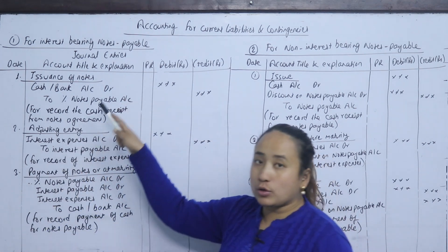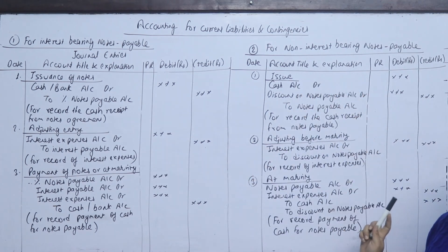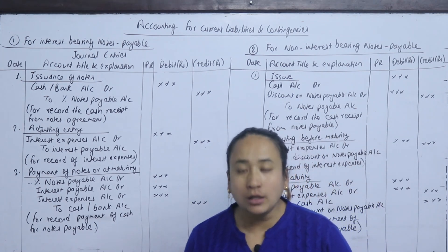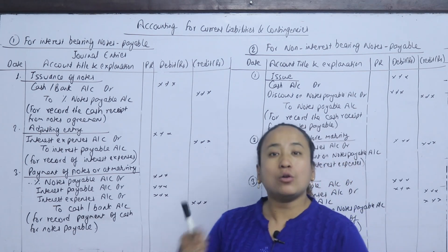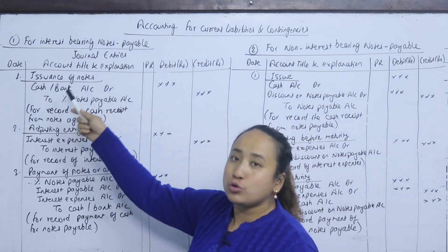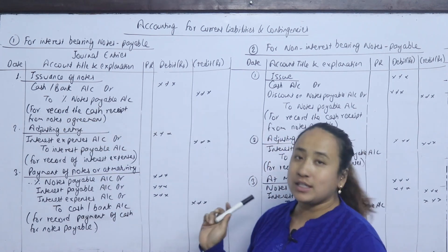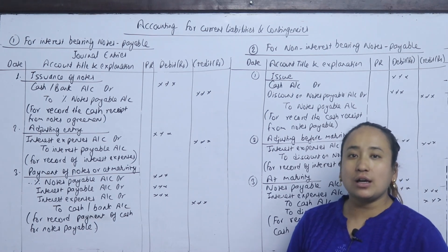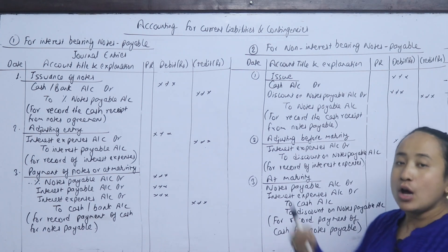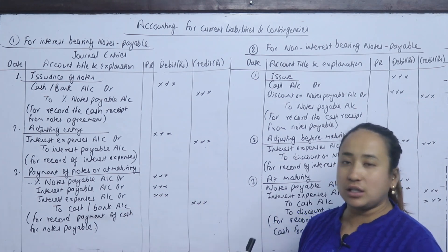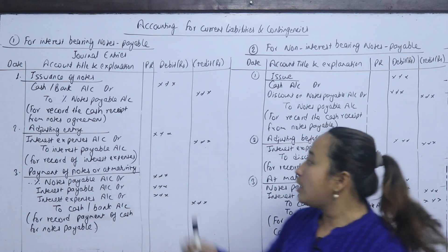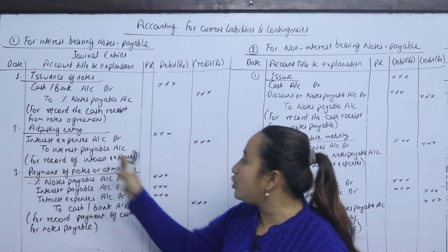Interest-bearing notes payable face value is Rs. 3,000,000. For the issuance of notes — when a note or agreement is signed, the first entry is a loan: cash received means bank account is debited and notes payable is credited. At the maturity period, interest expenses are recorded and paid.